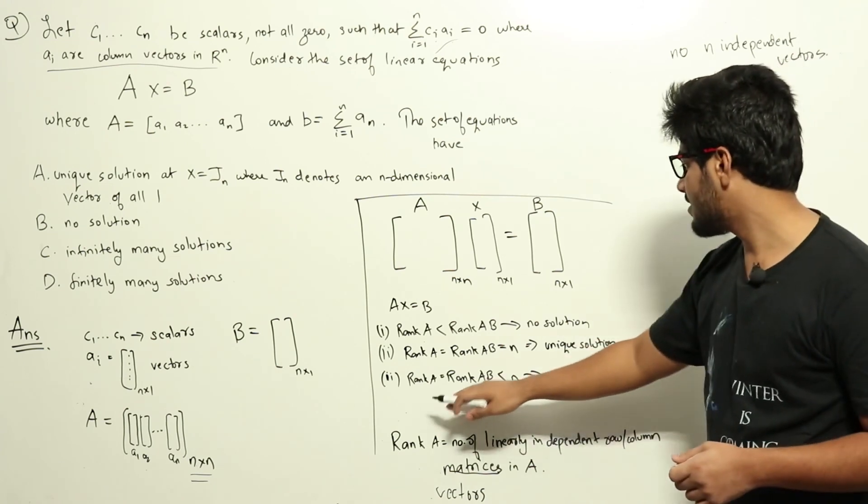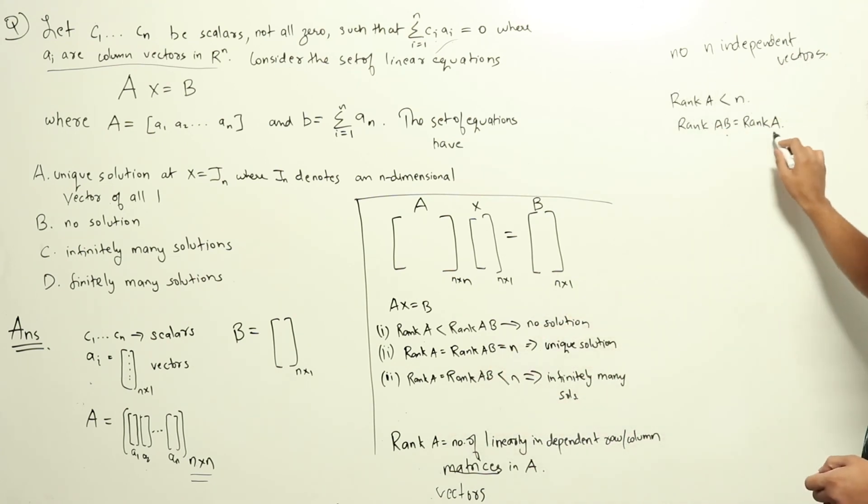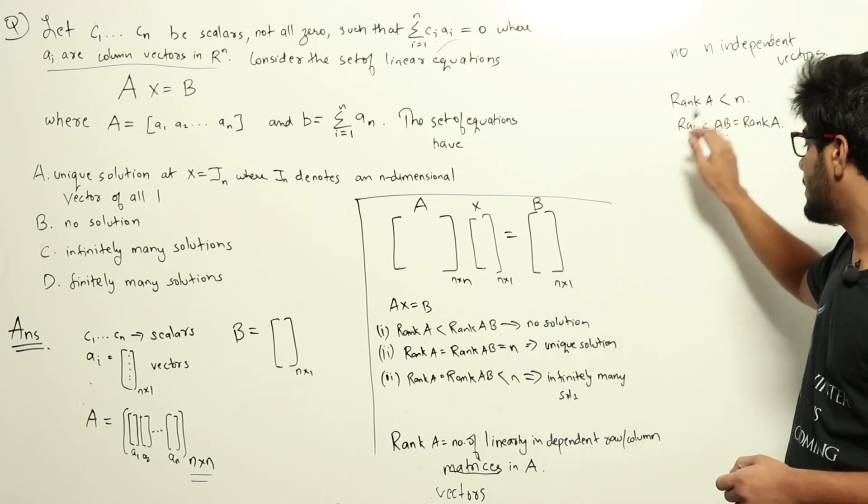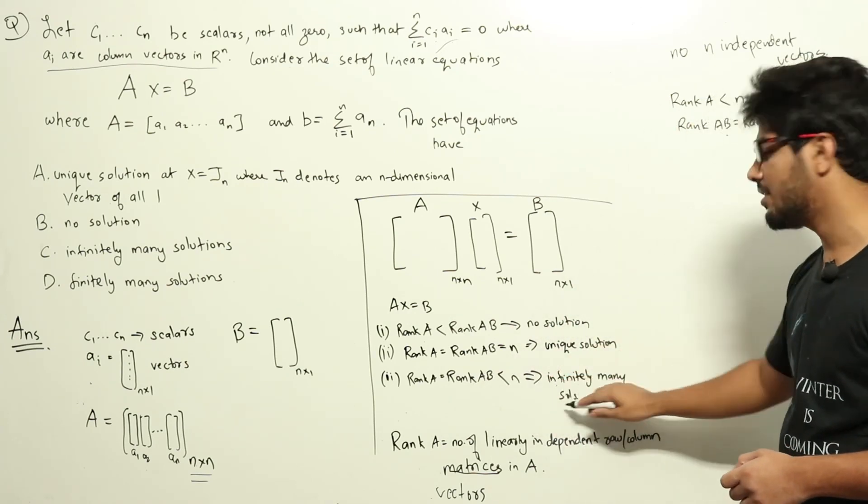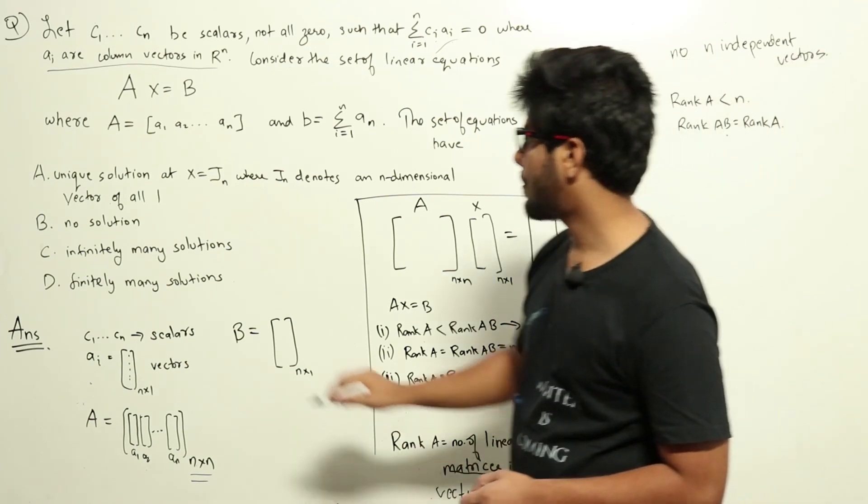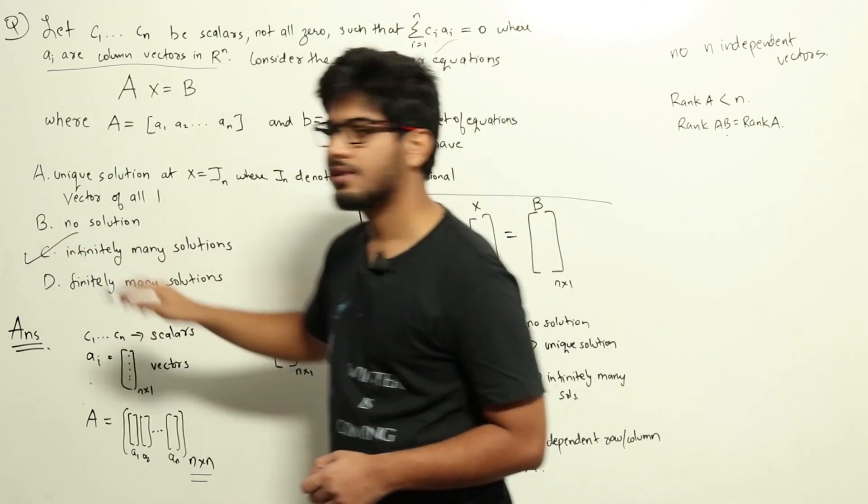Now if you look at the options, we can see that rank of Ab equals rank of A, and that rank will be less than n, which means there are infinitely many solutions. So C is the answer.